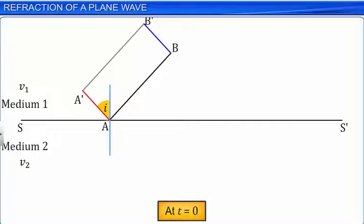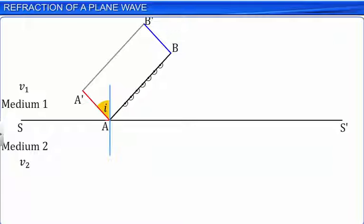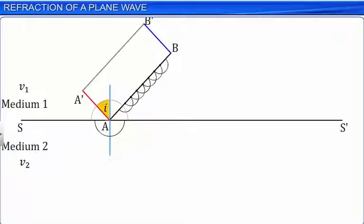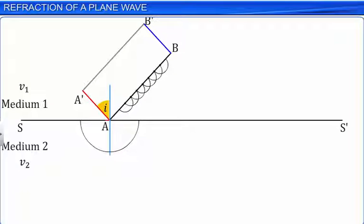Assume that at T equals 0, only point A of the wavefront AB is in contact with the interface SS'. The shape and location of the wavefront at any subsequent instant of time can be found by constructing secondary wavelets. Since point A is on the interface SS', part of the secondary wavelet from point A refracts into medium 2 and a part is reflected back into medium 1. If reflection at the interface is neglected, hemispherical wavefronts from point A propagate into medium 2.